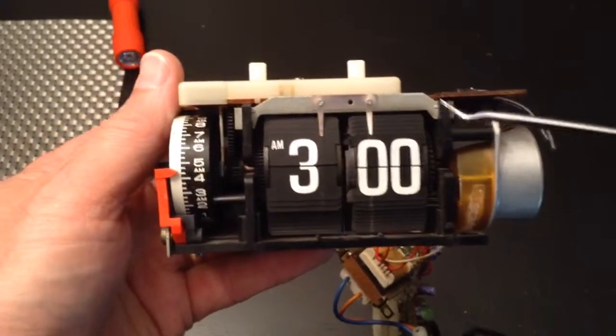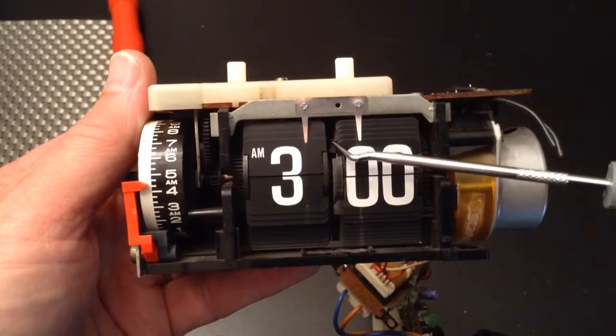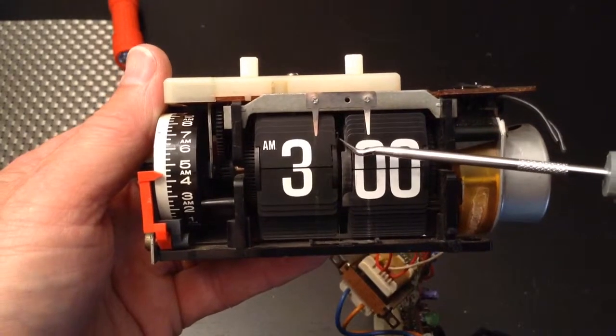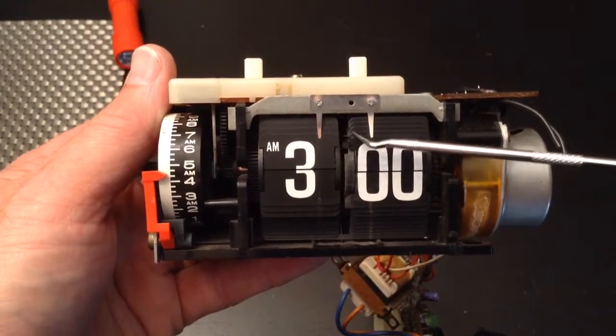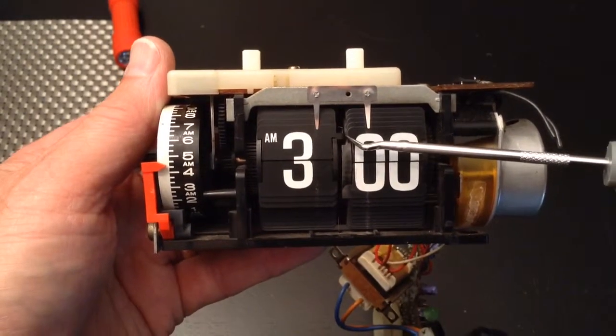Now the question is, can you fix it? Well, the question I have for you is, does your clock have the metal piece? And if so, it's likely bent. You can fix that. It is difficult.